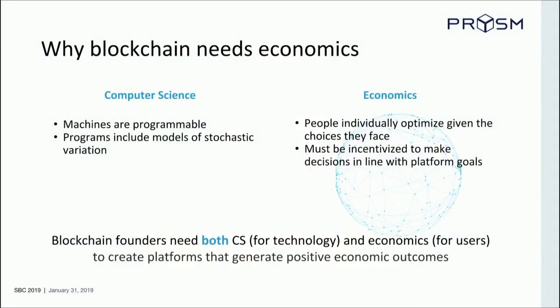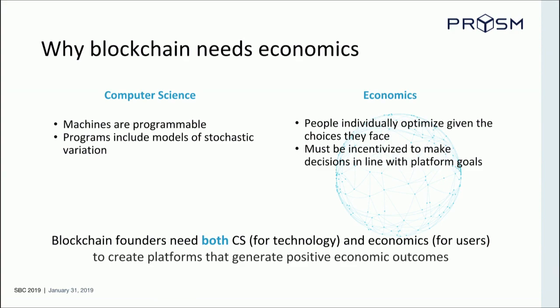At a fundamental level, computers are programmable. When we're writing a program, we have to think about what are all the different conditions that can occur, what kinds of variation might come up — but we know that the computer is going to do what we program it to do. On the other hand, people are not programmable. They have free will and they make decisions based on what they perceive to be in their own self-interest. A miner is not just going to come and mine because we tell them to — it has to be in their own interest, and the rewards have to balance out any cost.